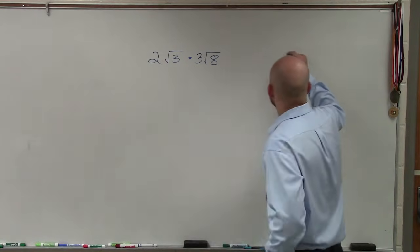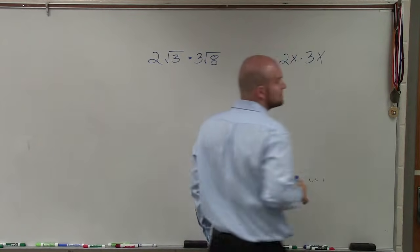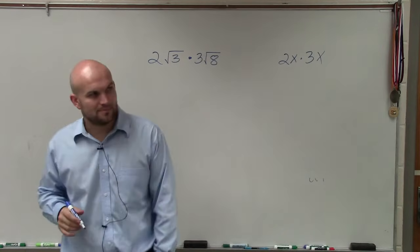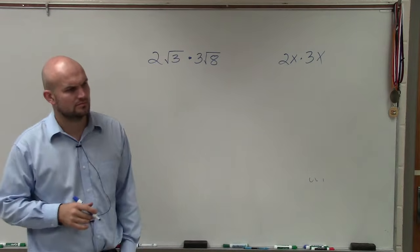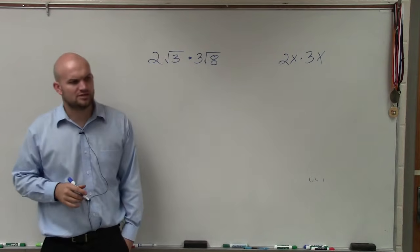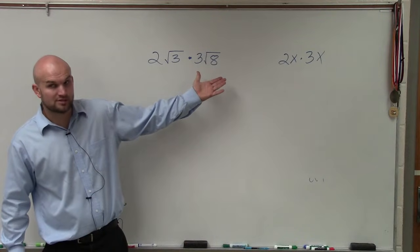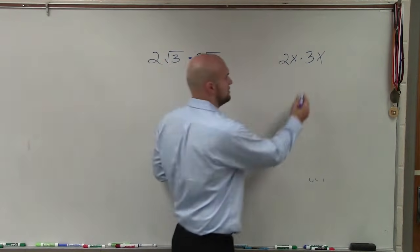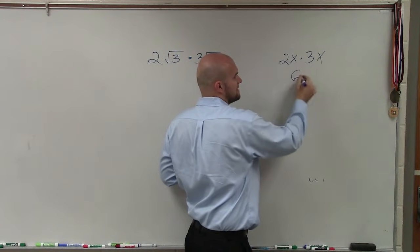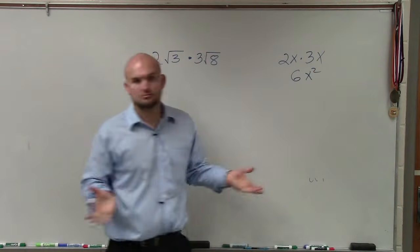If I was going to multiply 2x times 3x, just like we would multiply polynomials or these two monomials, I'd multiply 2 times 3, which is 6, and I'd multiply x times x, which is x squared, right?